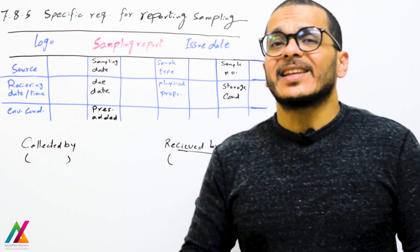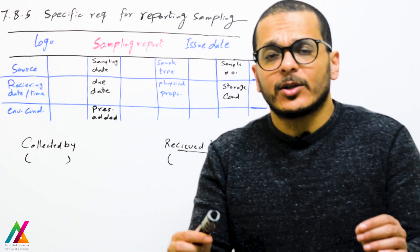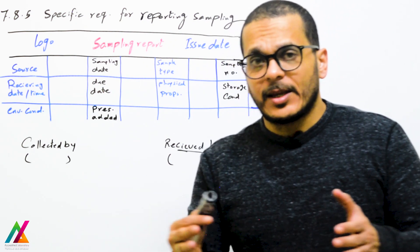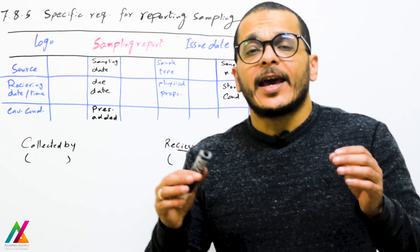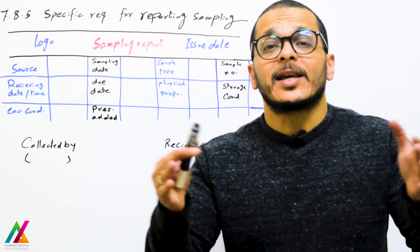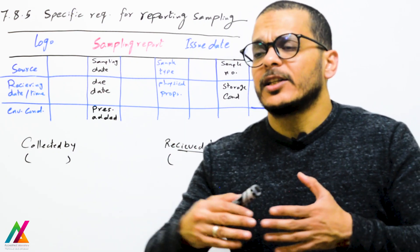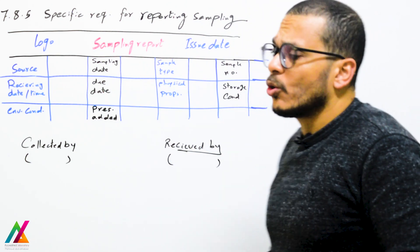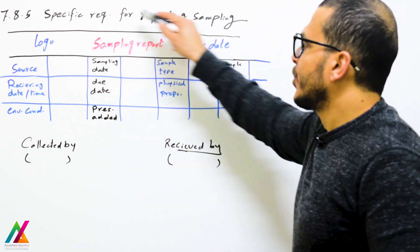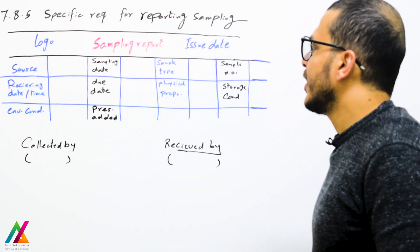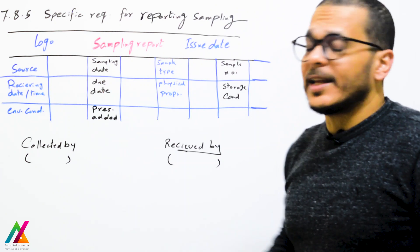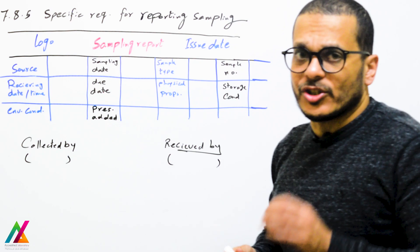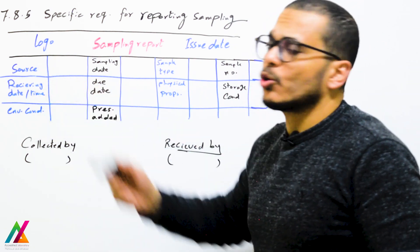We also have specific requirements for reporting sampling. Sampling was explained before in process requirements in detail, but here we have specific requirements for reporting when you collect a sample from the field. You shall have a complete report about the sample type, sample number, environmental conditions in the field, and other information. The report is called a sampling report.